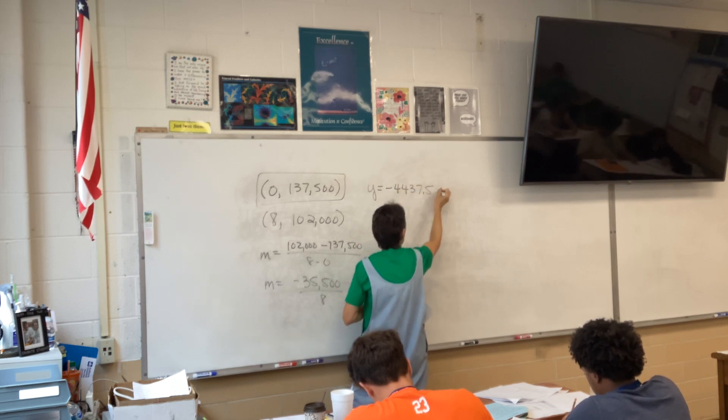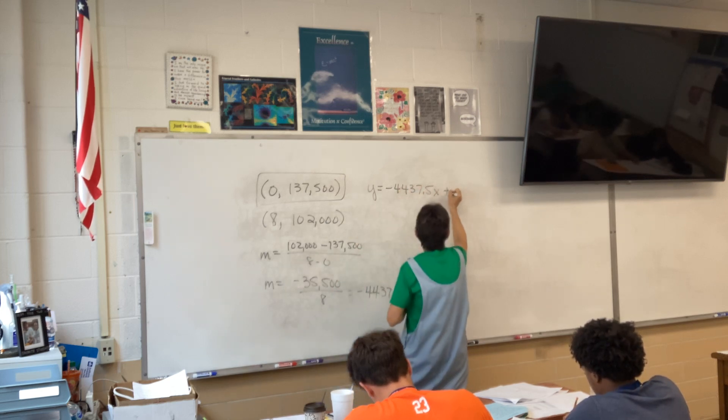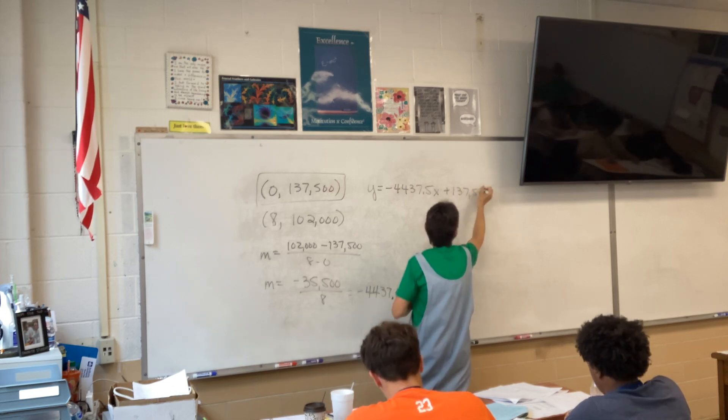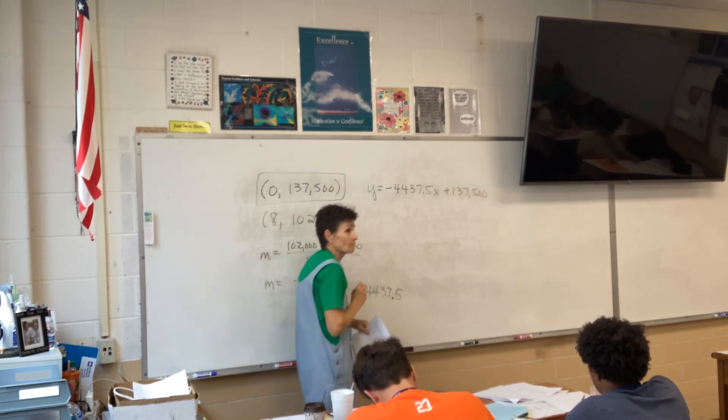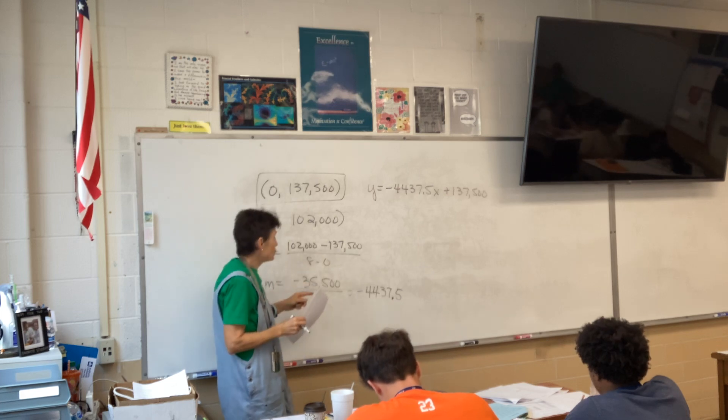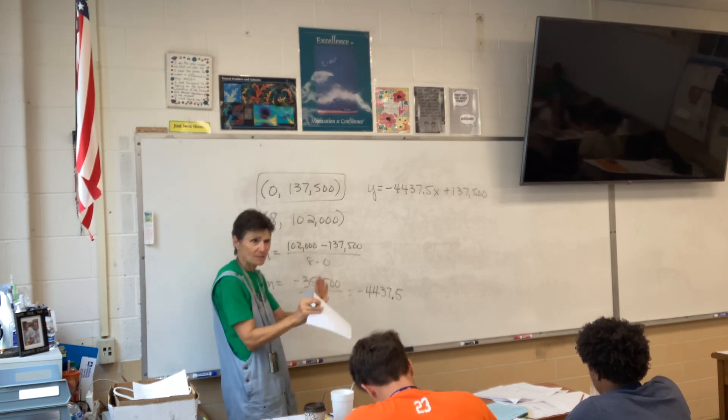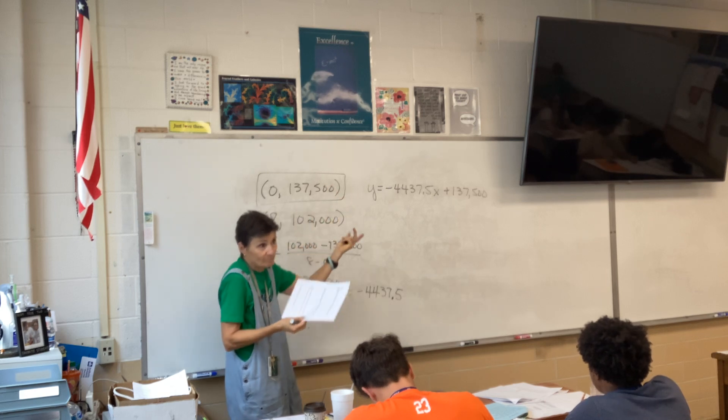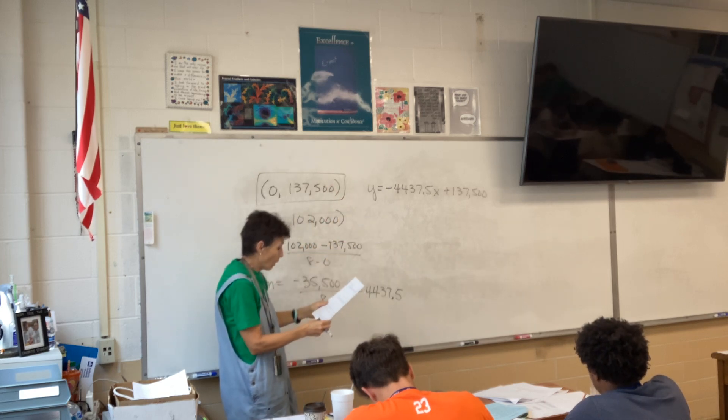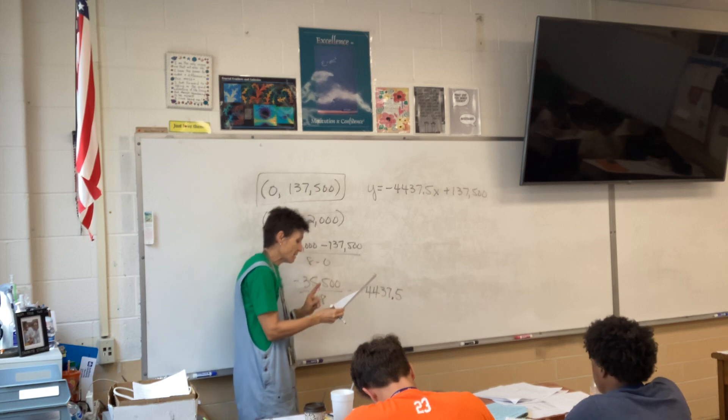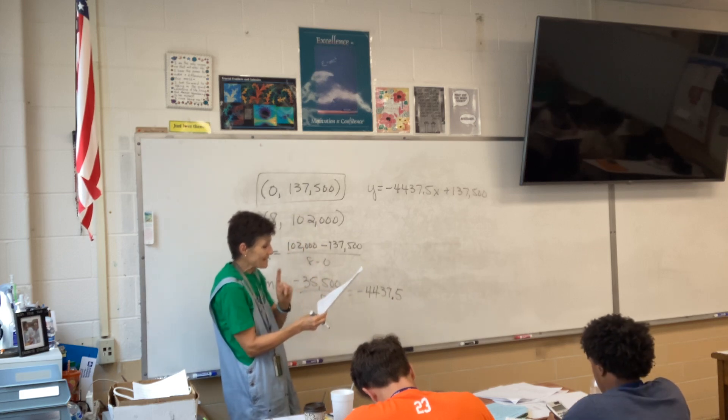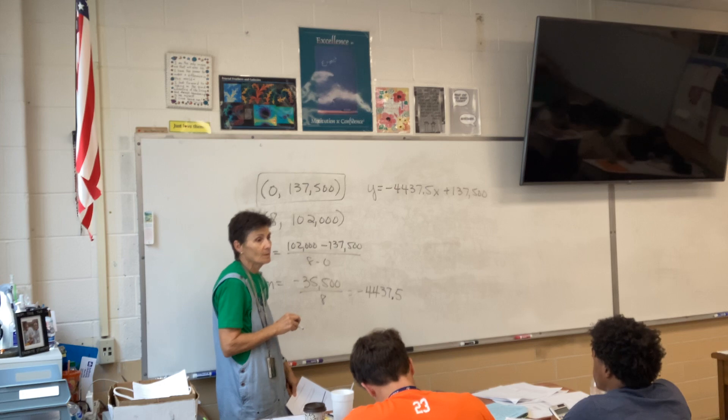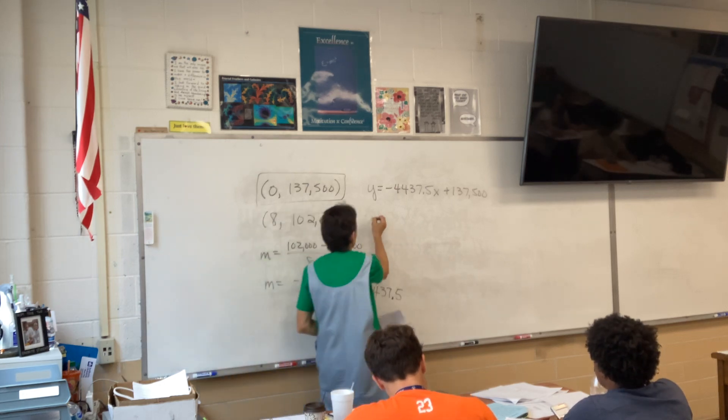So your linear function or linear equation is y equals negative 4,437.5x plus 137,500. Now, could you do point slope or something? Absolutely you could. But when they hand you the y-intercept, you know, might as well just use it.